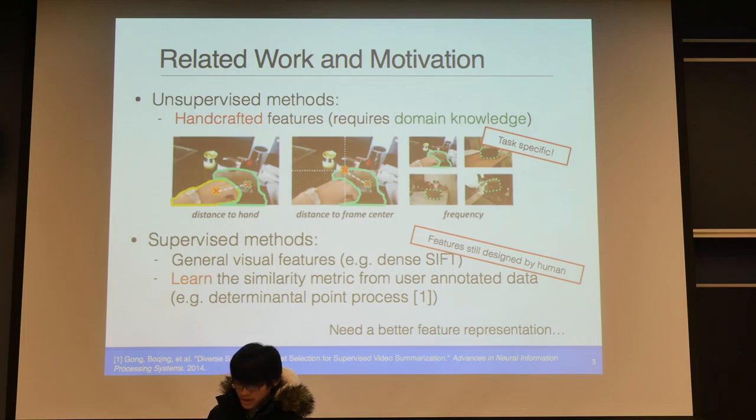Previous work on video summarization can be roughly classified into two methods. One is unsupervised method and the other is supervised. For unsupervised method, people usually assign some handcrafted features and then use these features to evaluate whether a frame is a key frame or not. As you can see from this figure, these are the features used for egocentric video summarization. We can know that these features are very task specific and require domain knowledge.